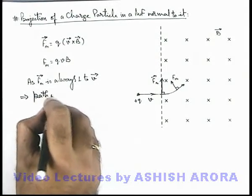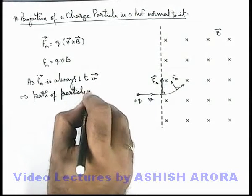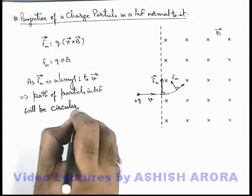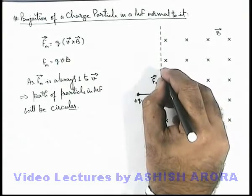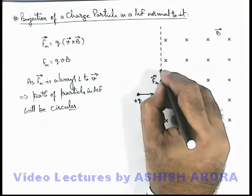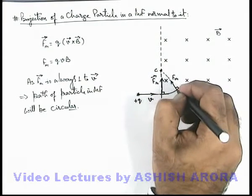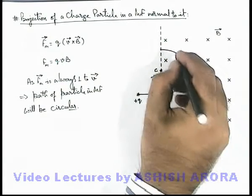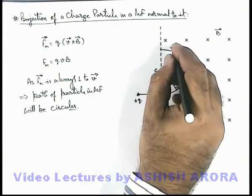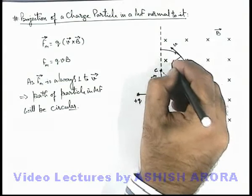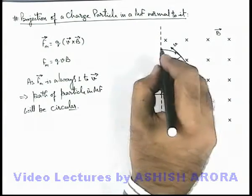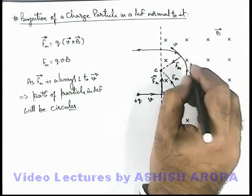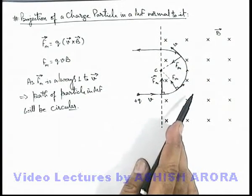Since the magnetic force is always perpendicular to the velocity vector, the path of the particle in the magnetic field will be circular. It will follow circular motion, as the force always acts perpendicular to velocity, and forces along the line toward a center cause circular motion. About this circle, the particle follows a circular path, and at every instant the velocity vector is tangential while the magnetic force vector always passes through the center of the circle. As soon as it reaches the boundary, it is ejected out and moves in a straight line tangentially.